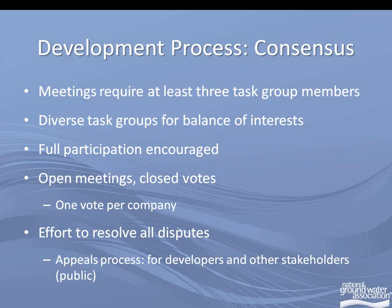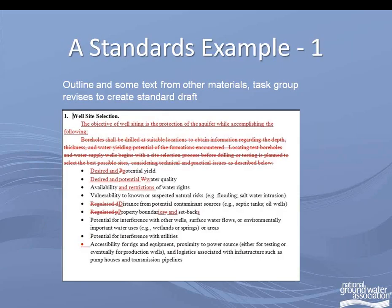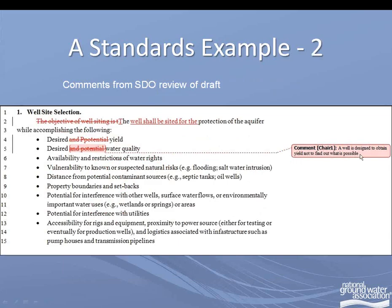This is just an example of the water well construction standard — one section: well site selection. The task group will begin writing this. You can see that text in red and underlined is new text being written on screen while you're on the call. Text that's crossed out is text that we've deleted during the call. So you can see the revisions as they're happening. Once the task group approved this, the SDO took a look and the chair said, why do we want 'desired and potential water quality'? Maybe it should just be 'desired water quality' — we can't say anything about potential.